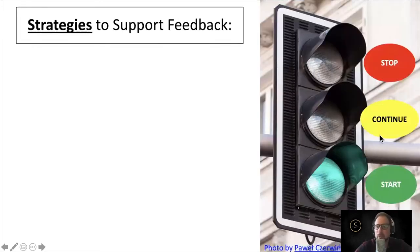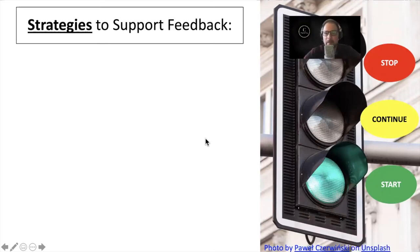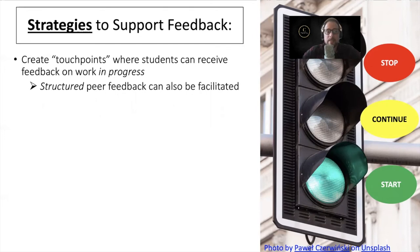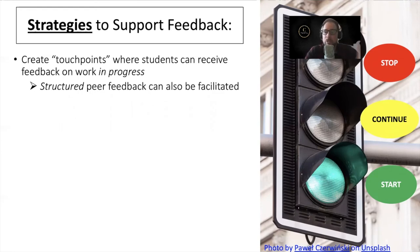Let's look at some more specific strategies to support the delivery of feedback. One thing we can do is create touch points where students are receiving feedback on work that is in progress — not waiting until the assignment is completed and turned in to comment, but giving them comments along the way, redirecting and supporting them when they need it most. When we have busy semesters with large sections, we might consider creating opportunities for structured peer feedback. By 'structured,' I mean creating some kind of a template or list of questions for students to respond to that are related to the actual evaluation criteria of the assignment.